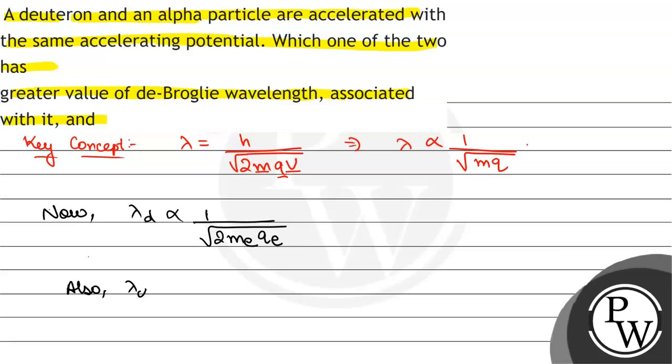Also, wavelength of alpha particle is inversely proportional to root under mass of alpha particle is 4 times mass of electron and charge of alpha particle is 2 times charge of electron.